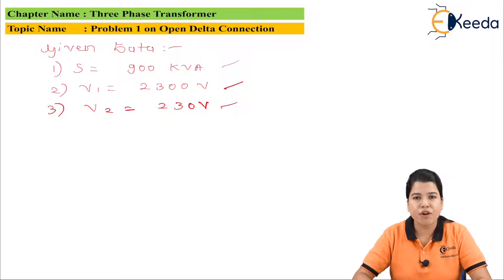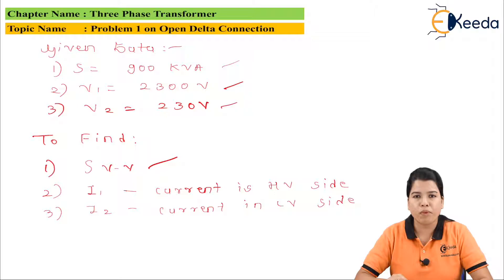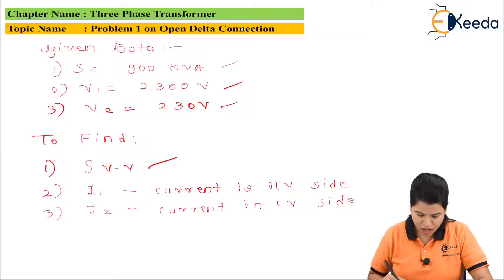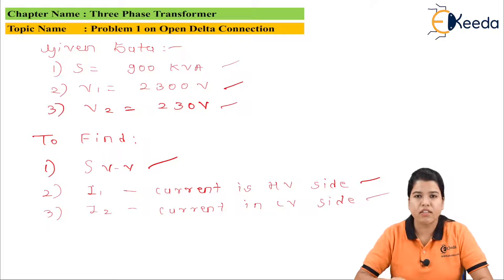In this problem we have to find: the kVA loading in the case of open delta, then I1 — the current in the HV side — and I2 — the current in the LV side. Now let us find the solution to this problem.